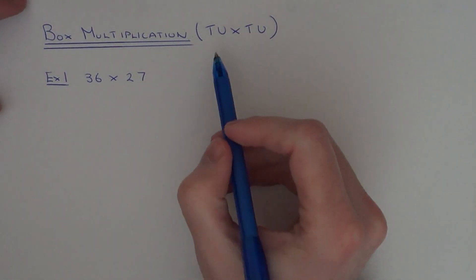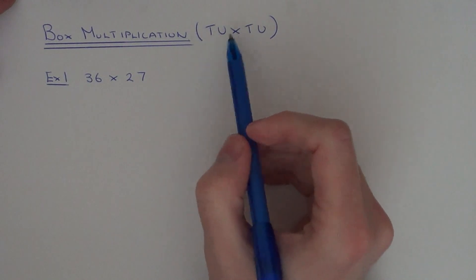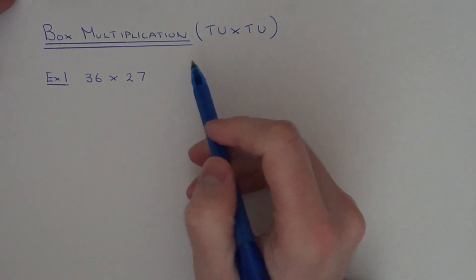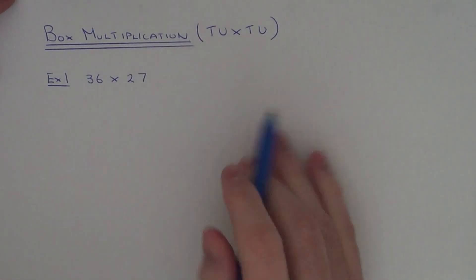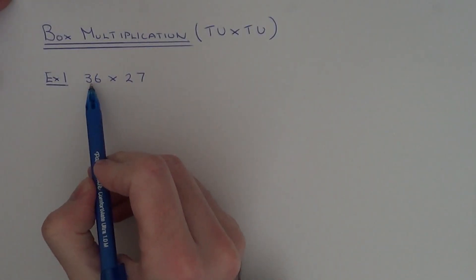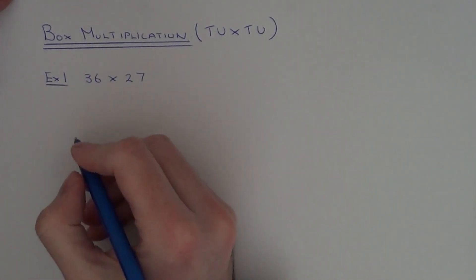Today I'm going to show you a couple of examples on how to multiply two two-digit numbers using box multiplication. So in our first example we've got 36 times 27.